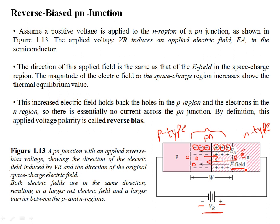Since the doping concentrations are not changing, the electrons — the negative charge majority carriers in the N-type region — are going to be more bunched together and much more concentrated near the positive battery terminal. Similarly, the holes are going to be much more concentrated in the region near the negative battery terminal.